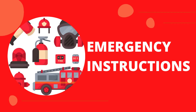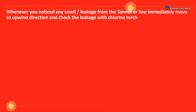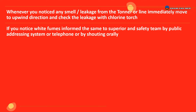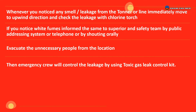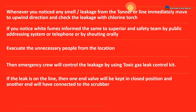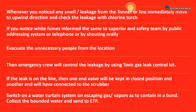Emergency Procedure in Case of Ammonia Gas Leak: Whenever you notice any smell or leakage from the tonner or line, immediately move to the upwind direction and check the leakage with a chlorine torch. If you notice white fumes, inform the same to superior and safety team by public addressing system, telephone, or by shouting orally. Evacuate unnecessary people from the location. If the leak is on the line, one end valve will be kept in closed position and the other end connected to the scrubber. Switch on the water curtain system on escaping gas vapors to contain within a bund. Collect the bounded water and send to ETP.